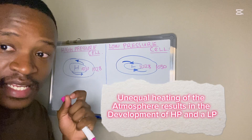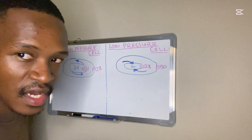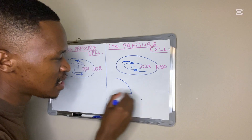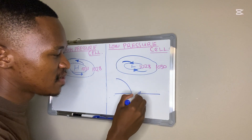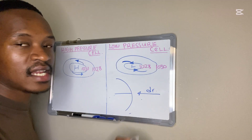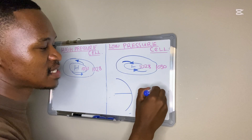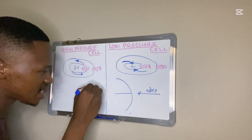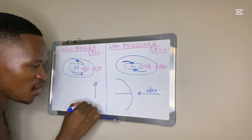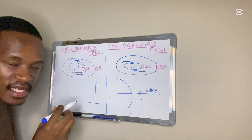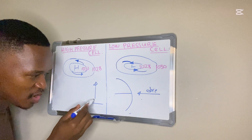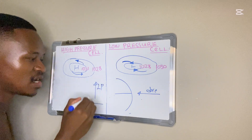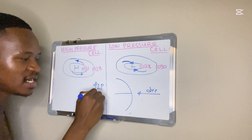High pressure cells and low pressure cells form as a result of the unequal heating of the atmosphere. Some places on Earth, such as the equator, receive direct sunlight. Hence we have more warm moist air which rises there. When air is rising, it exerts less pressure or less force on the surface — hence we have a low pressure.